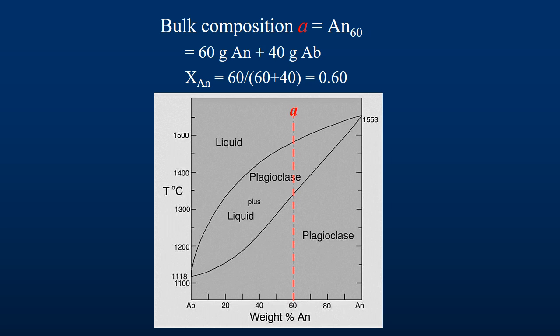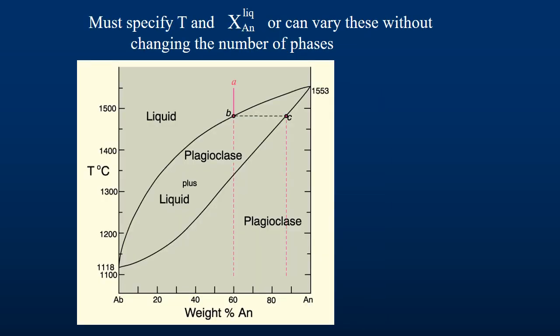To understand this, let's use the phase rule to analyze the behavior of a melt at intermediate composition. Consider cooling a bulk melt composition of composition A at 1560 degrees centigrade, which is 60% anorthite and 100% liquid. In this case, the composition is equal to the bulk composition because the system is entirely liquid.